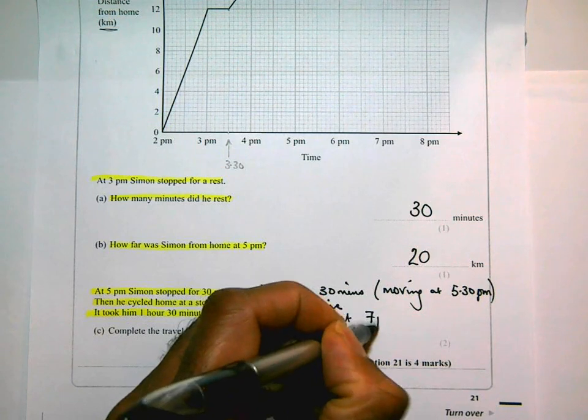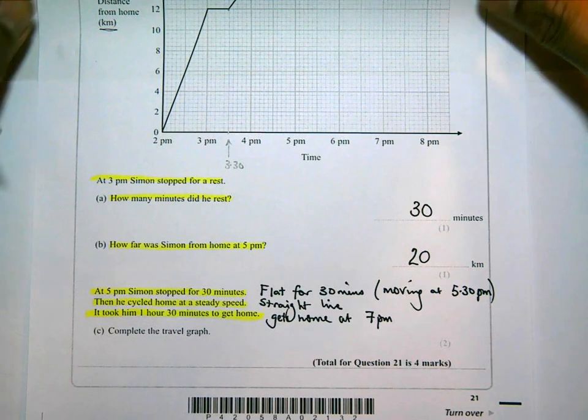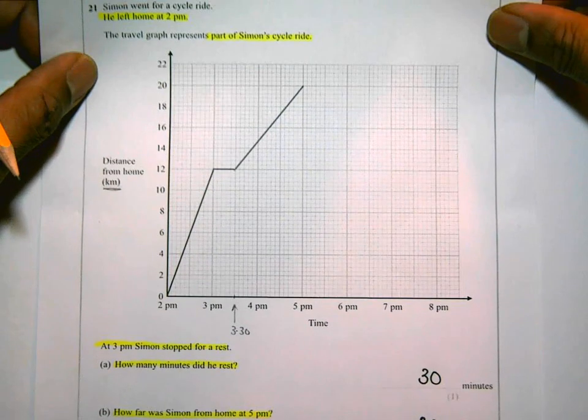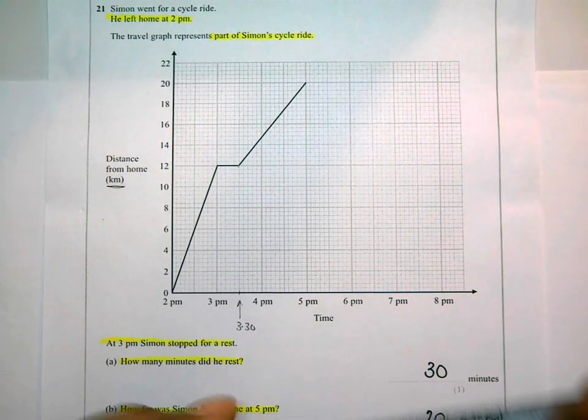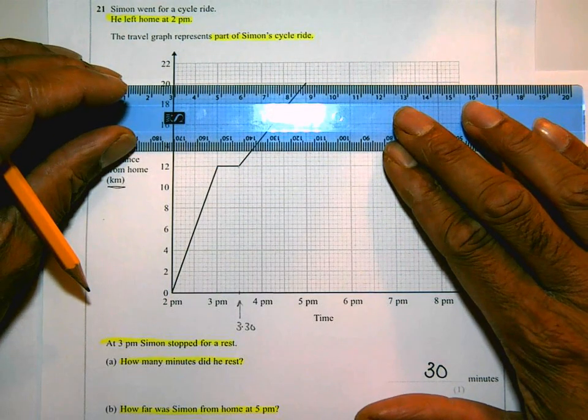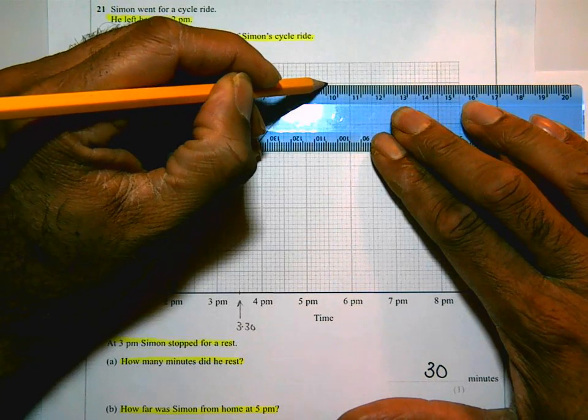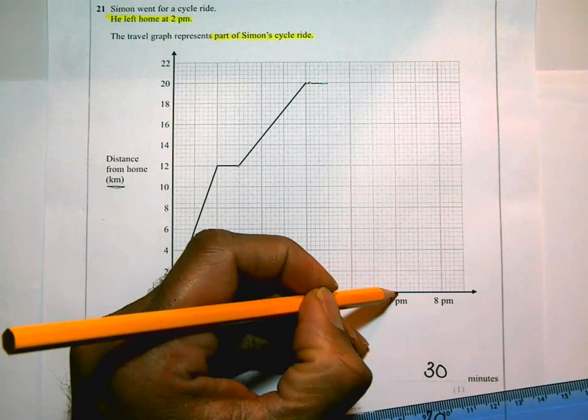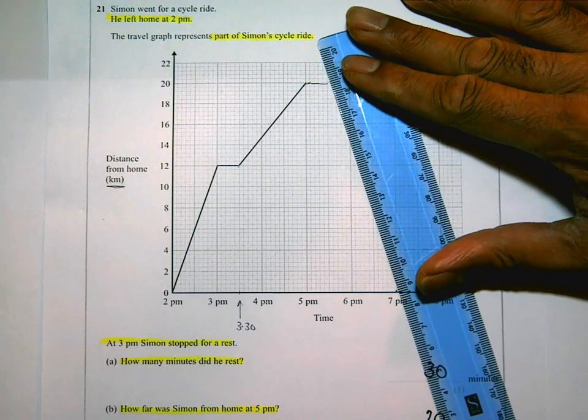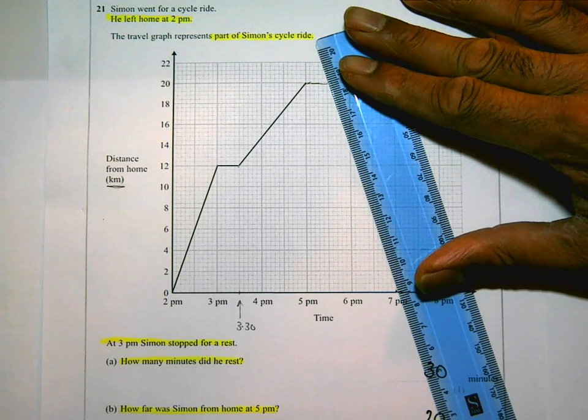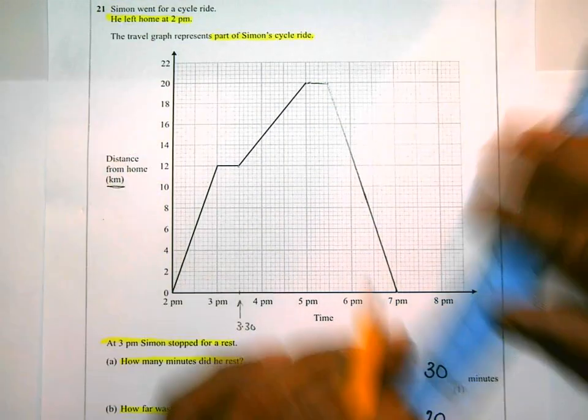Now I've got enough information there to help me finish the rest of this graph. So, and that's what they want us to do. So going back to the graph. And I'm referring back to all the information that they gave me. He stops for 30 minutes. So from 5 to 5:30, he's stopped. And they said he worked out that he got back home at 7 o'clock. And he goes back at a steady speed. And that is what his graph is going to look like.